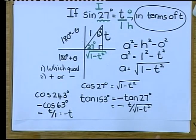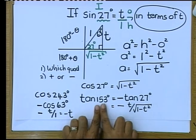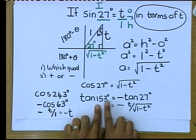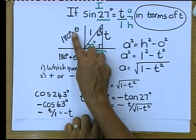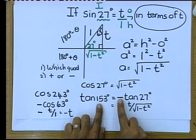Somebody just asked me: is it a negative tan? Absolutely. Why negative? Let's look at that — Tunjine, you said 153 is in the second quadrant, and in the second quadrant tan is negative. Hence my negative sign. Please, this is your most important question: which quadrant are you working in? You can't answer any question if you don't know which quadrant you are working in.